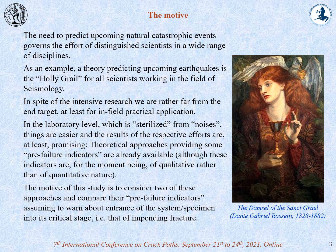The need to foresee upcoming catastrophic events gathers the effort of scientists in a wide range of disciplines. As yet, we are far from the end target. However, in laboratory level, things are promising. Theoretical approaches providing pre-failure indicators are already available. The motive of this study is to comparatively consider the indicators provided by two of these approaches.